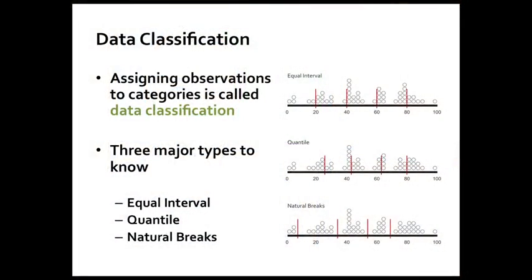Data classification is another aspect of thematic map design that's important to cover. Assigning observations to categories is called data classification, and there are three major types to know about: equal interval classification, quantile classification, and natural break classification. There are other methods beyond those, but they're outside the scope of this class. With equal interval classification, what you care about is establishing an interval based on the value range. If I have 50 observations, I decide I want five classes and split them into equal categories: 0 to 20, 20 to 40, and so on — the value range drives the classification.